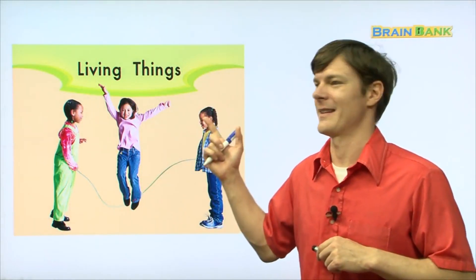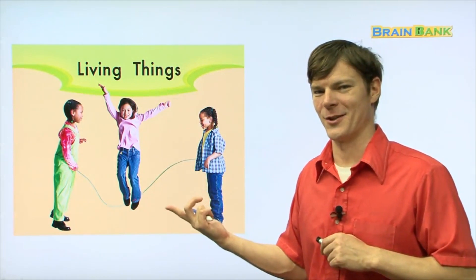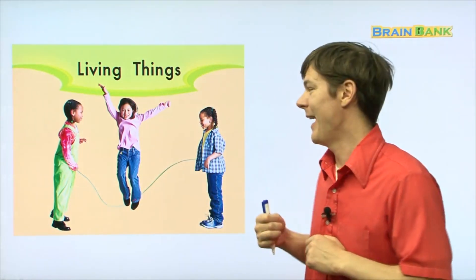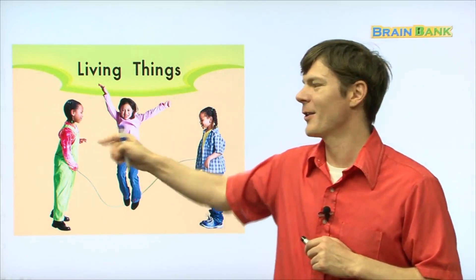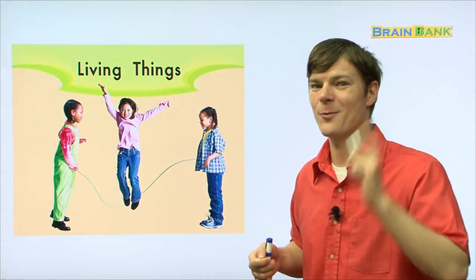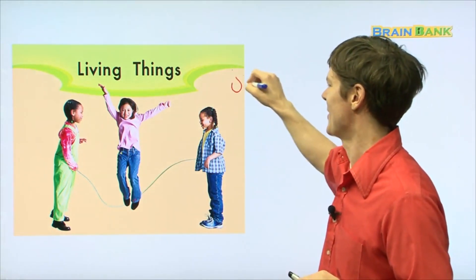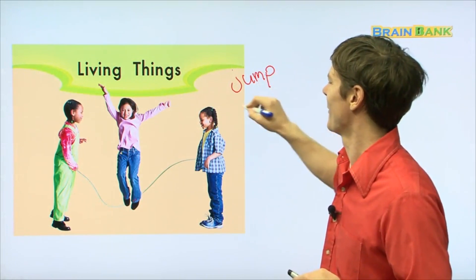So, living things. Look at this picture right here. What do you see in this picture? Three girls. And what are these three girls doing? They are jumping rope. Chulumpki, jump rope. All right, I'll write that down for you. Jump rope.